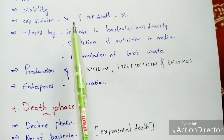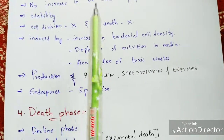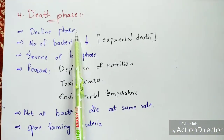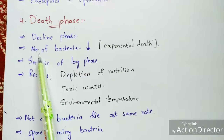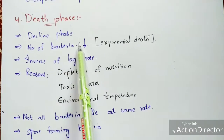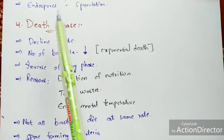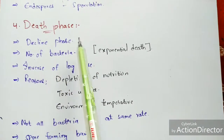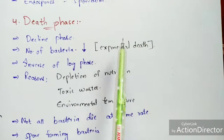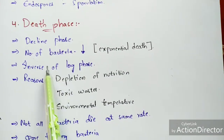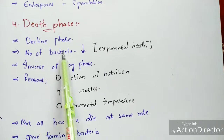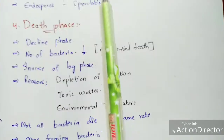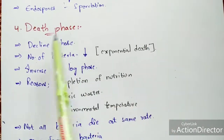After the stationary phase, bacteria enter the fourth phase — the death phase, also called the decline phase, because the number of bacterial cells decreases. The cells that come out of the stationary phase enter the death phase, where aging leads to cell death. As bacteria die, the count of bacterial cells rapidly decreases. This is called exponential death.